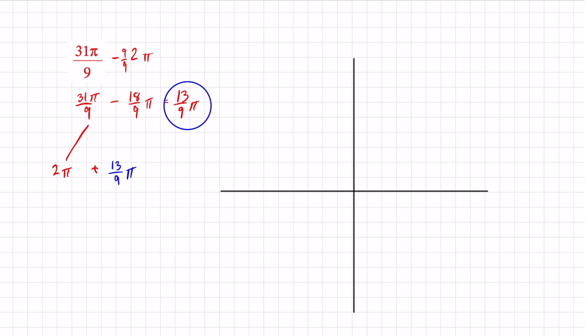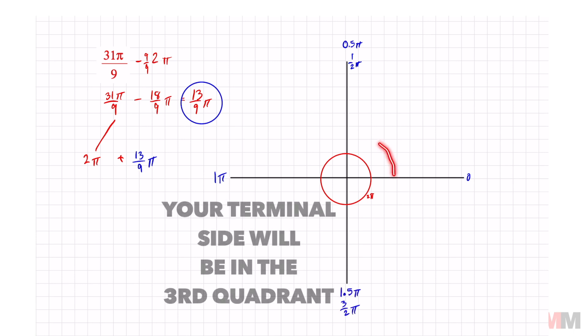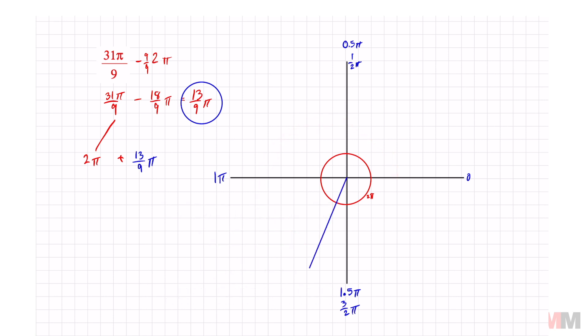To draw my terminal side, I have to travel one full rotation. There's my 2π and 13 over 9. All you have to do is divide and you can kind of gauge where to place that. If I divide 13 over 9, that equals about 1.4. If this is 0, this is a half π or 0.5π. This is one full π. So it's going to pass that, but it's not going to pass 1.5π or 3 halves π. 1.4 is closer to 1.5. It's around right there. So now we can draw our terminal side.